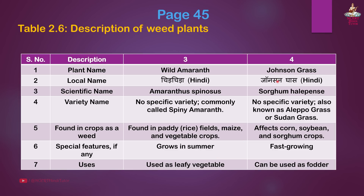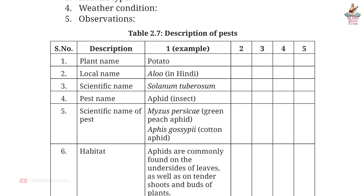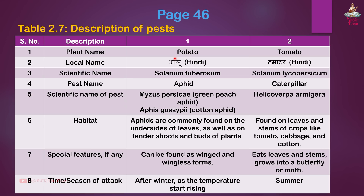Fourth weed: Johnson grass. Scientific name: Sorghum halepense. No specific variety. Also known as Aleppo grass or Sudan grass. Found as a weed affecting corn, soybean and sorghum crops. Special features: Fast growing. Uses: Can be used as fodder.